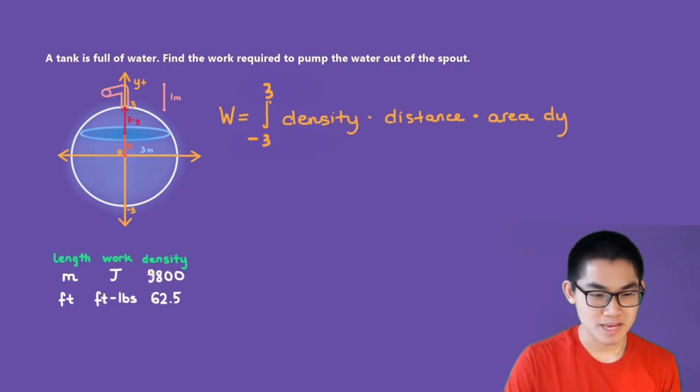The density will be 9,800, according to our table, because the length given is in meters and so our work will be in joules.